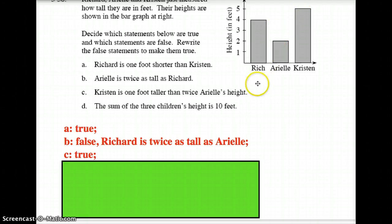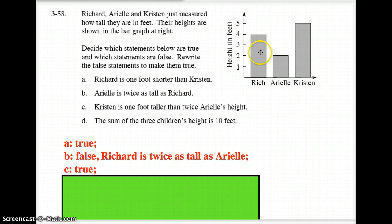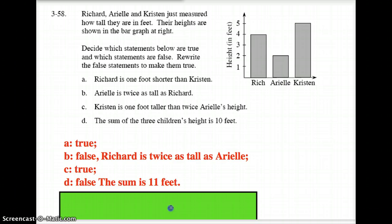And then the final one: the sum, which the word sum means to add, the sum of the three children's height is 10 feet. So we've got Rich's height here, we've got Ariel's height here, and we've got Kristen's height here. Figure out what the sum of those three heights are and then mark down true or false. Alright, you should have that by now. Rich was four feet tall, Ariel was two feet tall, that makes six feet tall, plus Kristen's five feet tall does not make 10, that makes 11 feet.